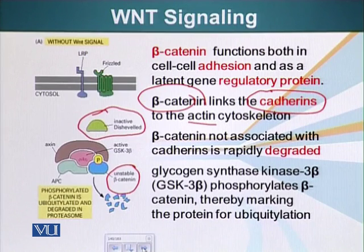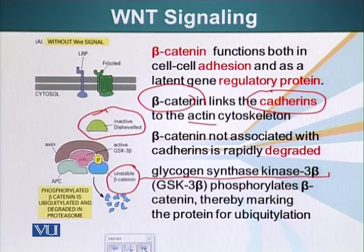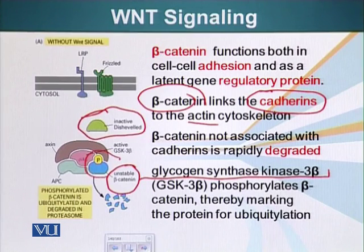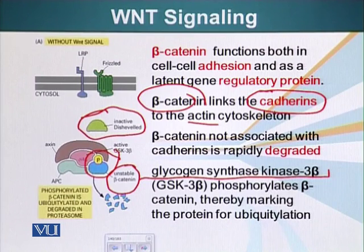The destruction complex is composed of glycogen synthase kinase 3-beta, or GSK3-beta, which phosphorylates beta-catenin, thereby marking it for degradation. Before it is degraded, a small ubiquitin molecule is attached to the protein. Any protein tagged with ubiquitin is taken to the proteasome and degraded. So cells take precaution that no extra beta-catenin is present.